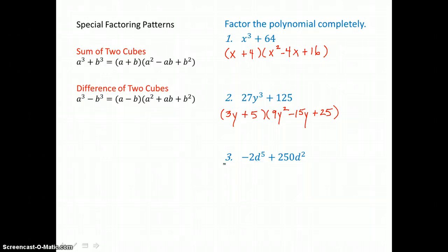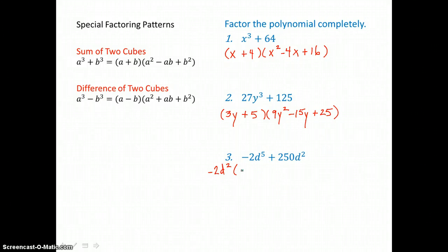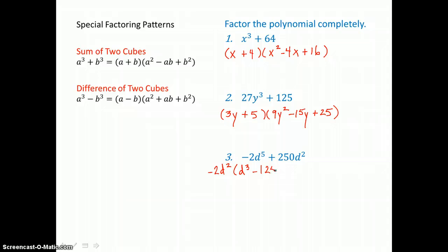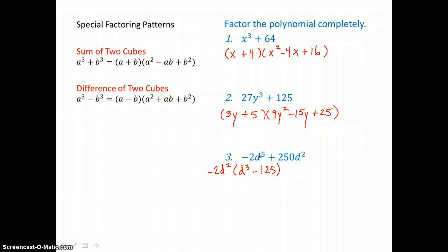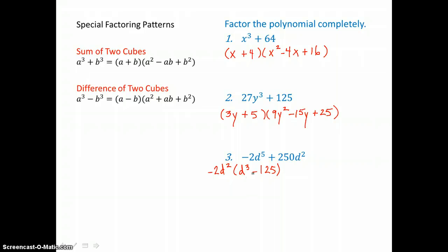In the third example, there's a greatest common factor of negative 2d squared, so we factor that out first, leaving d cubed minus 125. Let's check by distributing: negative 2d squared times d cubed is negative 2d to the fifth, and negative 2d squared times negative 125 is positive 250d squared. So it's factored correctly, and what's left is the difference of two perfect cubes.